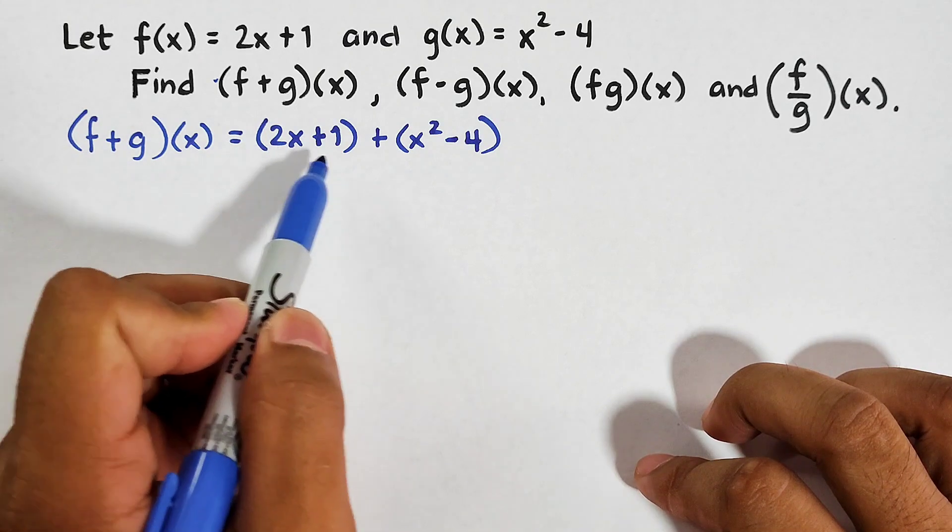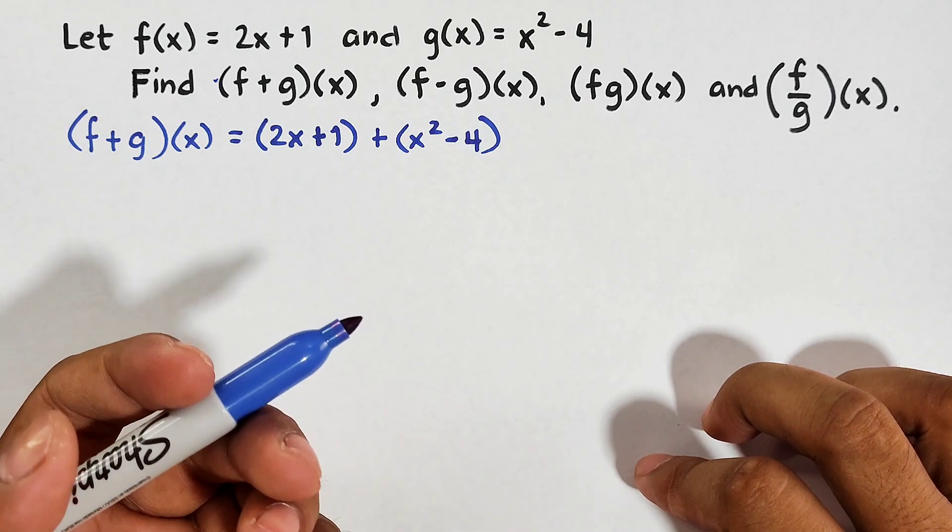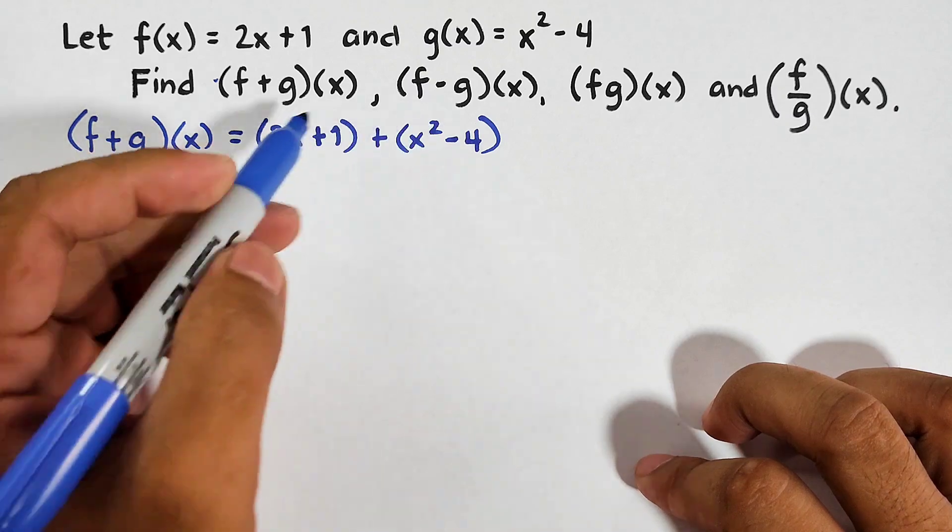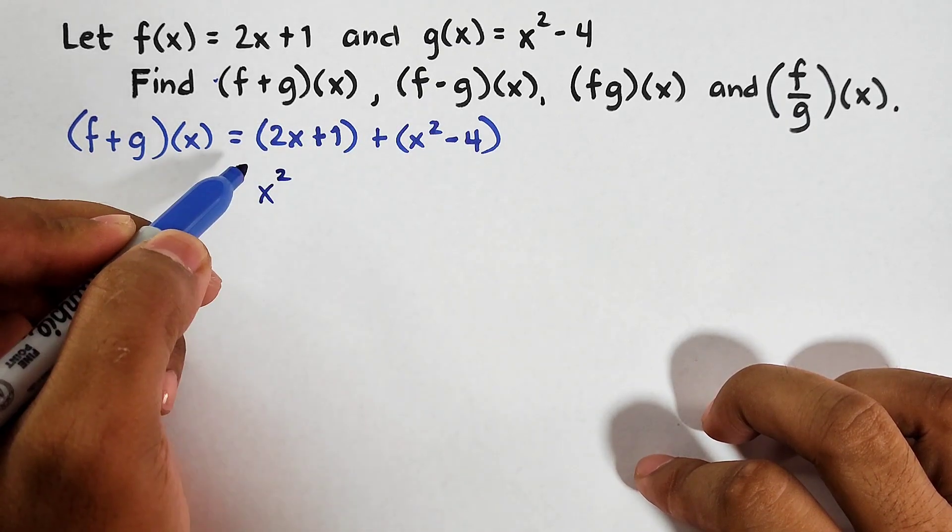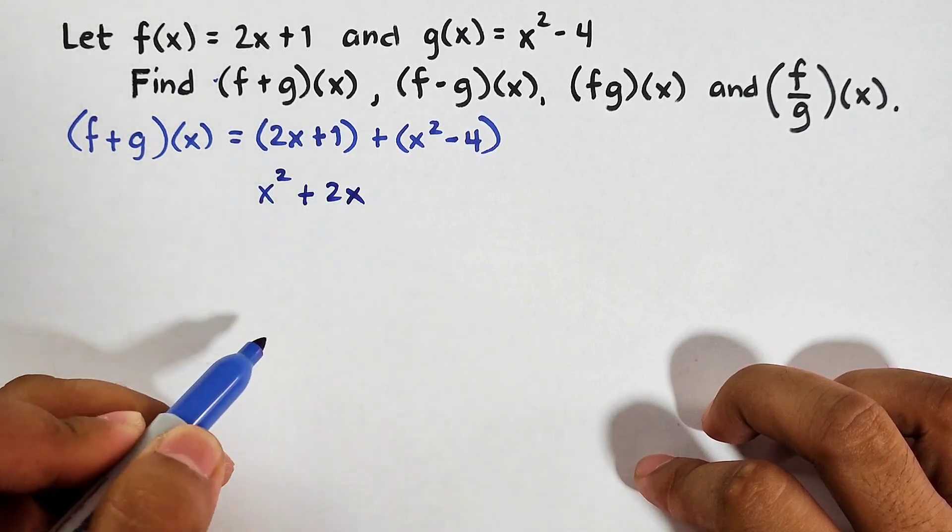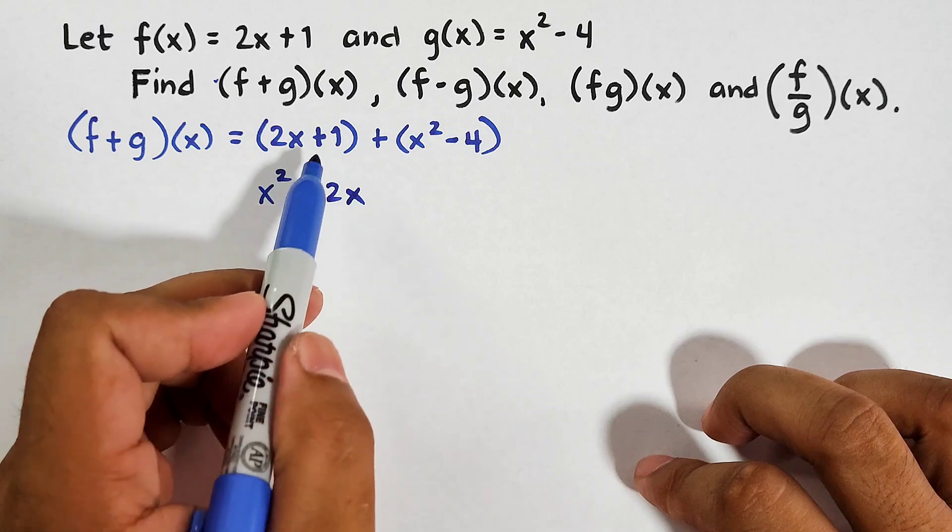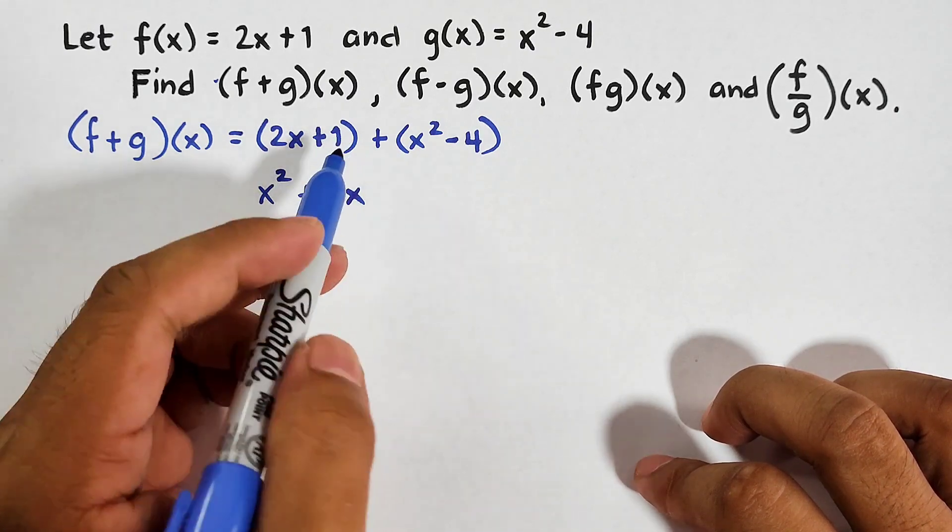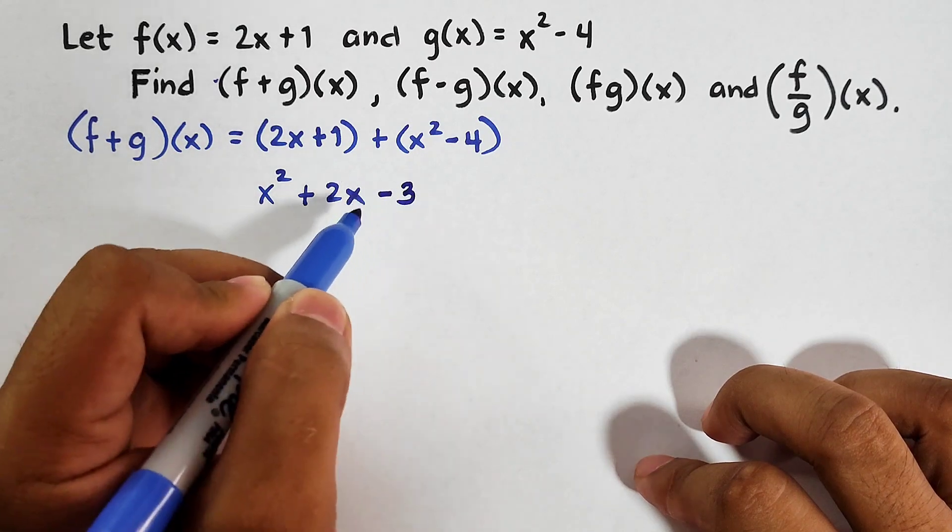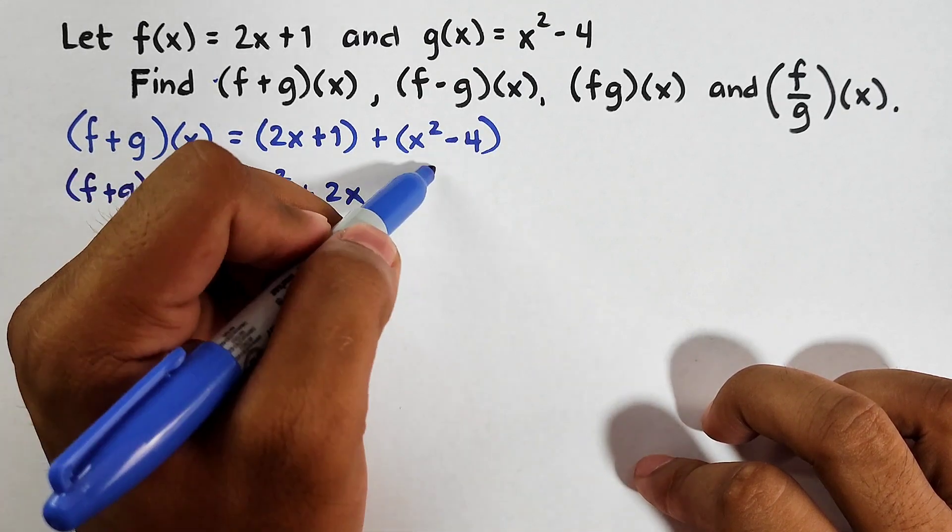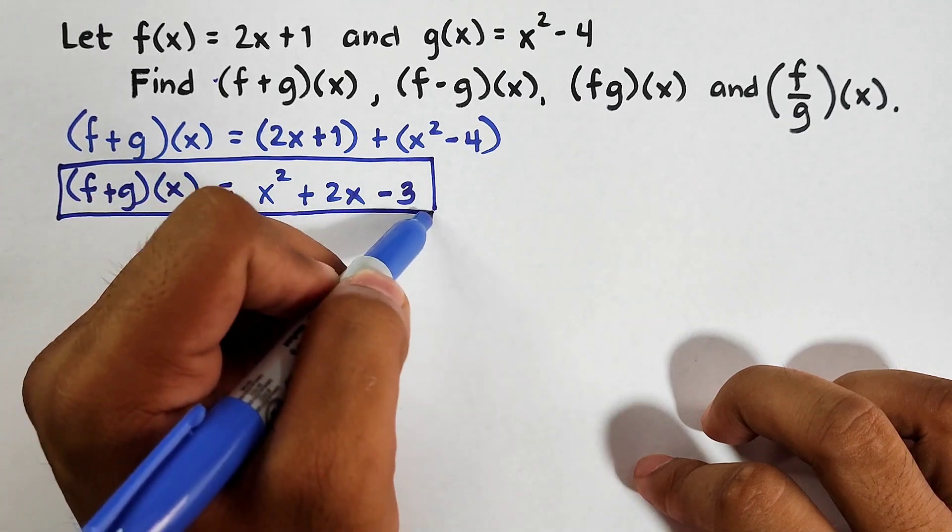Here we have 2x and x². We cannot combine them, though they have the same x, but their exponents are different. So we will copy x² then plus 2x. And as for the constants, we have positive 1 or plus 1, then negative 4. If we will add them, the answer is negative 3. And as you can see, this is the value of f + g(x). This is now the final answer for the first operation.